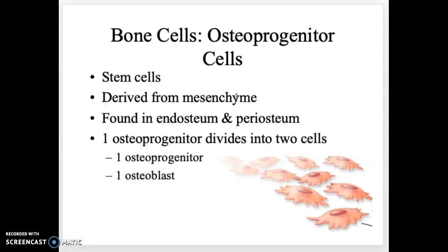Osteoprogenitor cells are stem cells derived from the mesenchyme, a tissue present during fetal development. They can be found in the endosteum and periosteum. When an osteoprogenitor cell divides, it makes one identical copy of itself — another osteoprogenitor cell — and one osteoblast that is ready to build bone.